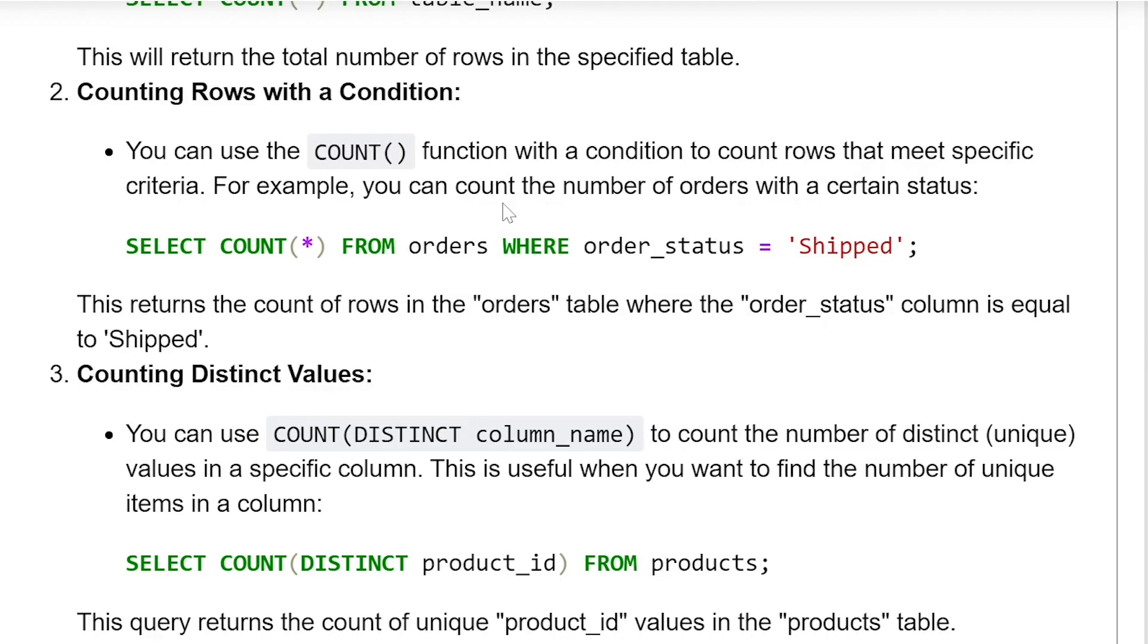Select count star from orders where order status is equal to shipped. This returns the count of rows in the orders table where order status column is equal to shipped.